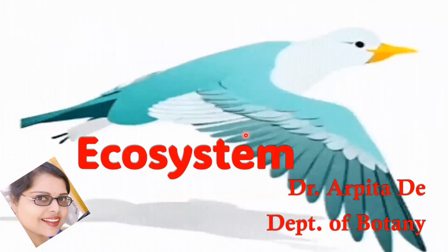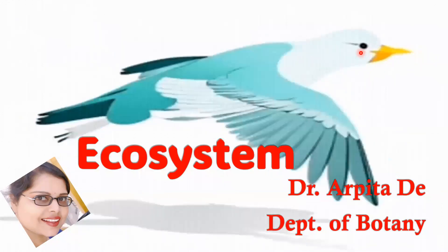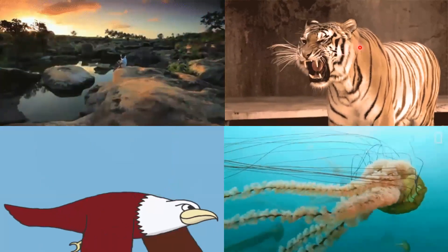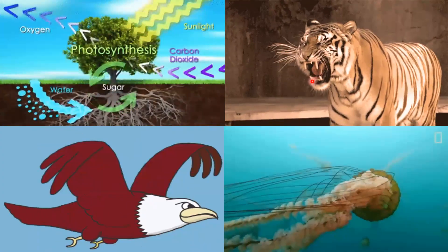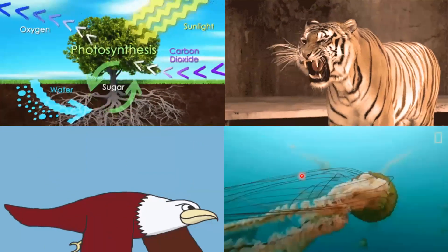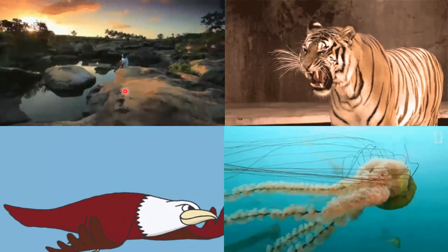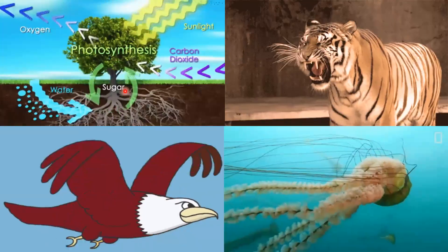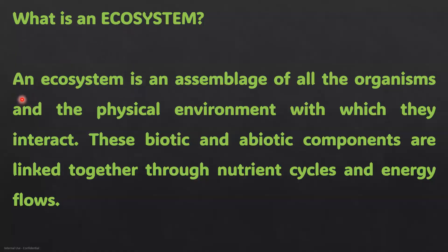Good evening everyone. Today we'll discuss ecosystems in detail. We get to see a collection of organisms in our ecosystem — this includes birds, animals, and the entire environment. With plants photosynthesizing and life existing deep down in oceanic bodies, the biotic as well as abiotic community together form the ecosystem. An ecosystem is an assemblage of all organisms and the physical environment with which they interact. These biotic and abiotic components are linked through nutrient cycles and energy flows.